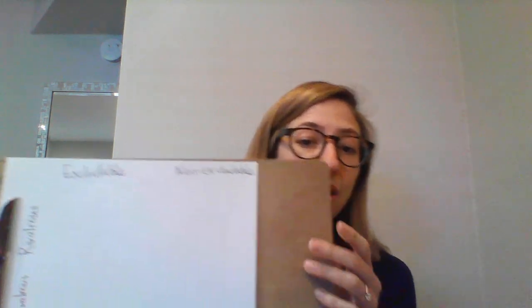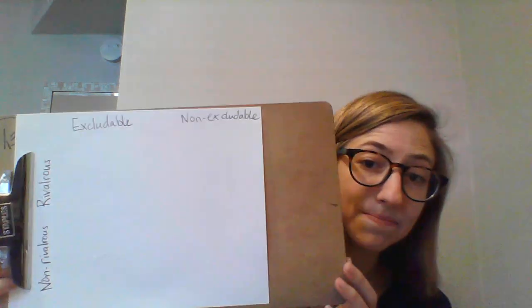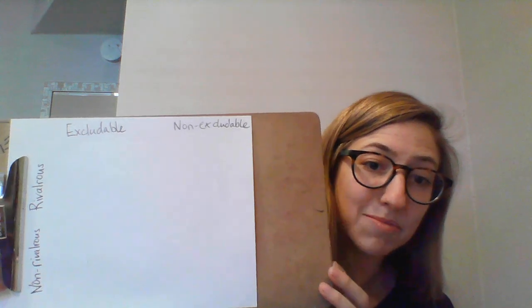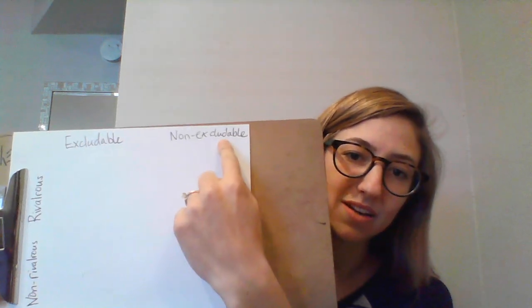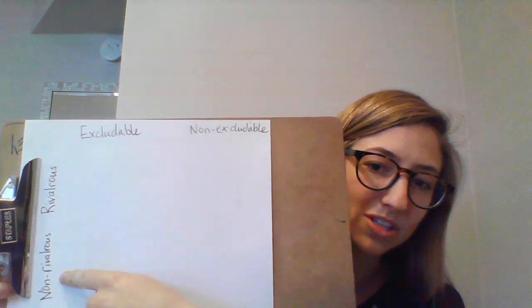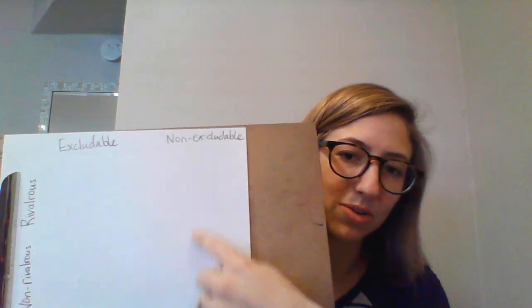Before we get into what Pure Public Goods are, we're going to talk about four categories of goods — one of which is Pure Public Goods. We're going to consider two characteristics of goods: rivalry and excludability. We'll have a table with excludable goods, non-excludable goods, rivalrous goods, and non-rivalrous goods, and then four categories of goods based on how they fit into that framework.